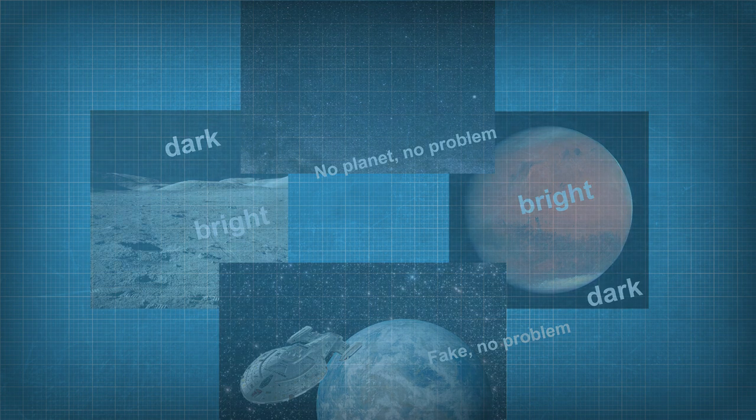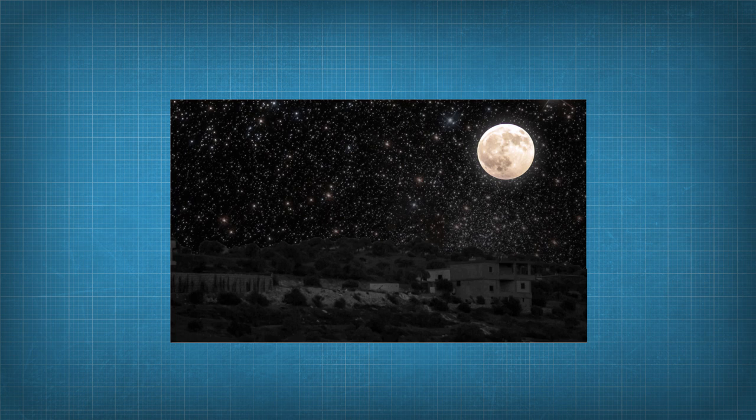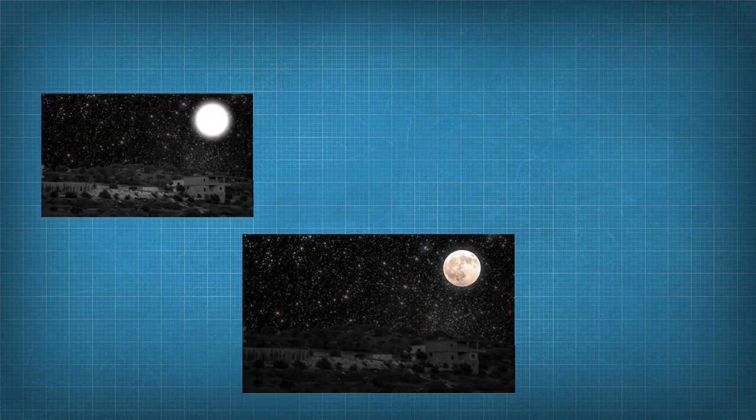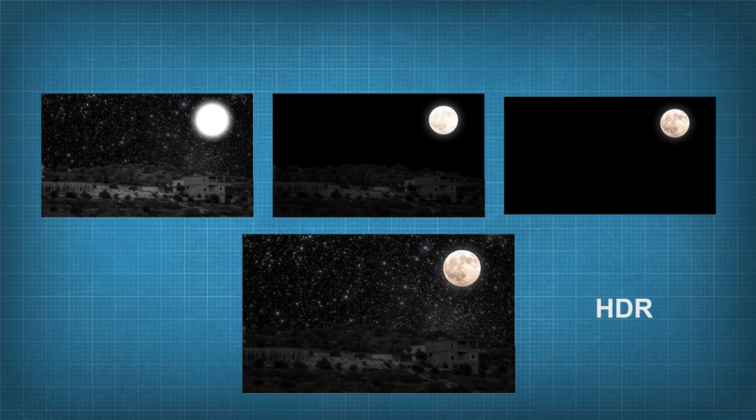To see the problem, try for yourself to take an image of the full moon with the stars in the background. Should be easy, right? There are stars at night and there's the moon. Let me know how you did. Note that modern cell phones might be able to do that, but they are cheating. They combine three different exposures and create a new picture out of it. It is called an HDR image, so make sure to turn the HDR functionality off if possible.